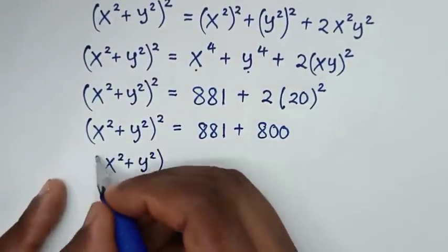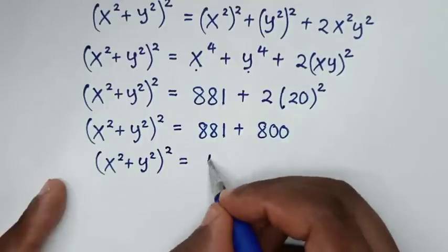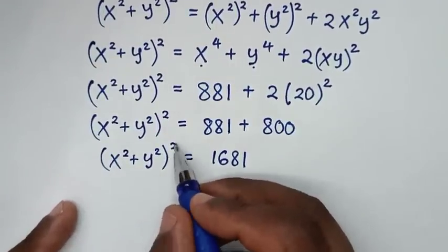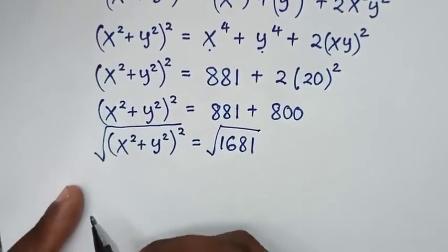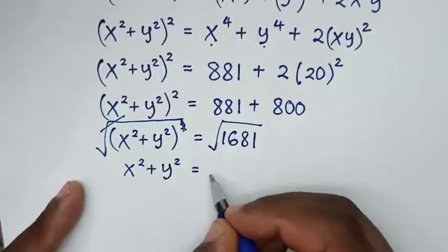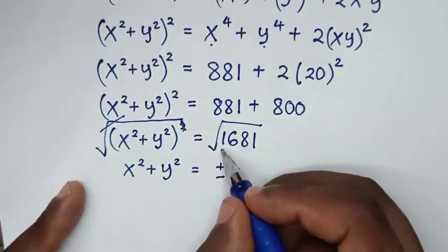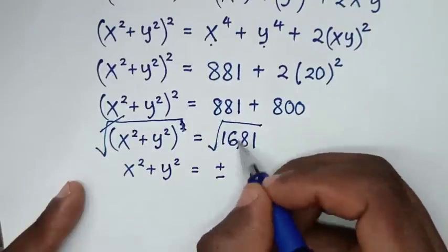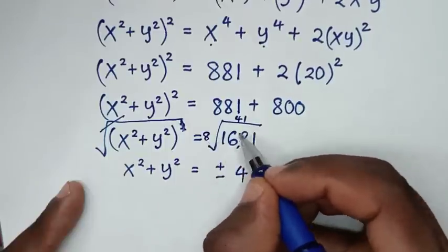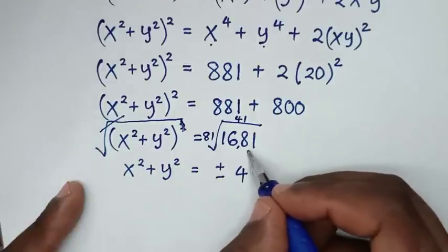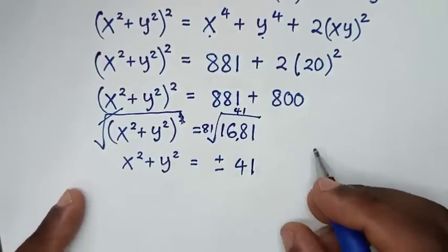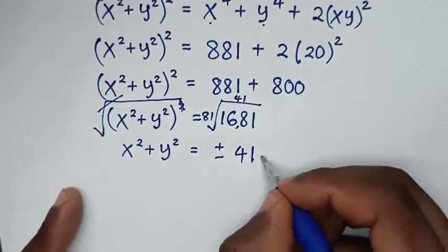So x squared plus y squared bracket squared is equal to 881 plus 800, which is 1681. To get x squared plus y squared, we'll apply square root on both sides. The square root cancels the square, so x squared plus y squared is equal to plus or minus the square root of 1681. The square root of 1681 is 41, so x squared plus y squared equals plus or minus 41. We'll call this equation 4.